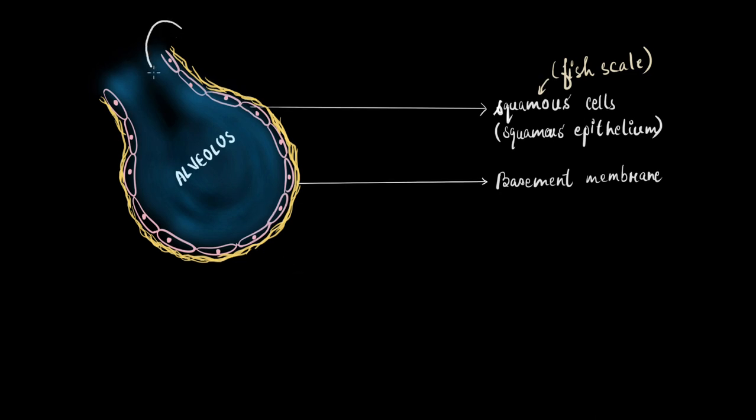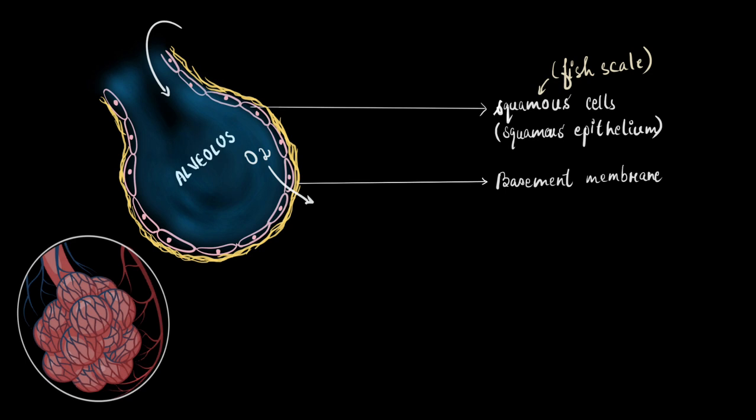Now, when the gas enters the alveolus, let's just say oxygen entered the alveolus. And it passed through this layer, the layer of squamous cells and basement membrane. Its next destination is our blood. So, the best position for our blood capillaries will be to sit very closely to this alveolar wall. Right. You must have seen images like this where you can clearly see how dense network of blood capillaries surrounds the alveolus.